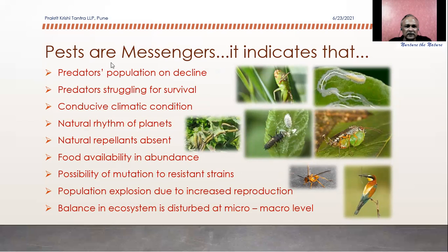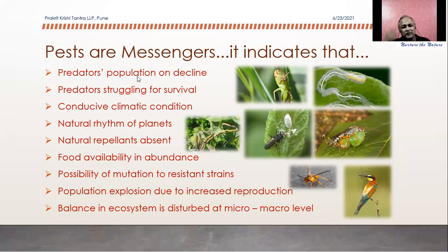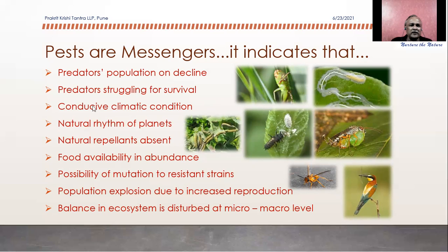If pests are visible in our garden, that is indicating something — giving the message that either the population of predators is declining. Because natural checks and balances mean everything is food for some other organism, cycling and recycling in both the plant and animal kingdoms. If the predator's population is declining, the pest population will increase. If predators are struggling for survival, the climatic condition is not suitable in that ecosystem — this is connected with the natural rhythm, which will be explained in the next session on the lunar calendar.